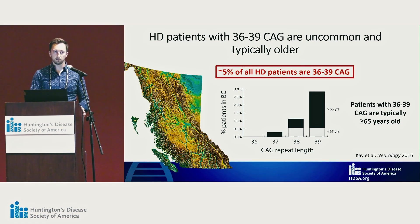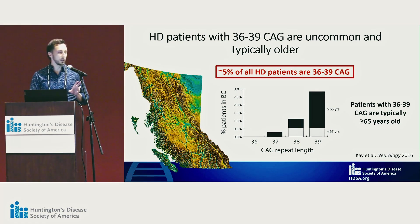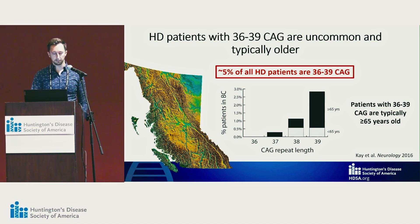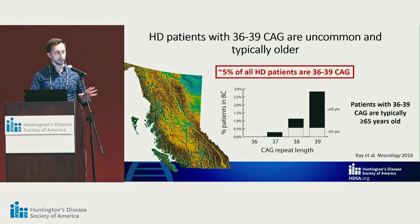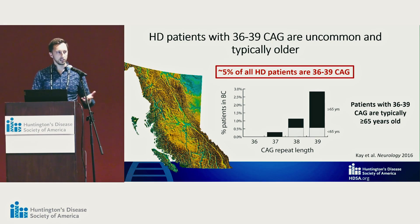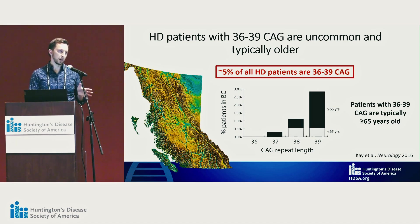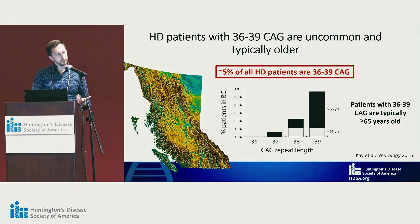Some more details about these 36 to 39 repeats: they're not very common in the clinic. In a study in British Columbia, we counted all the HD patients in the whole province and looked at how many had 36 to 39 and how old they generally were. About 5% of people who come to an HD clinic have 36 to 39, and they're usually over the age of 65 — a smaller number than most people with HD, and they tend to present later in life.